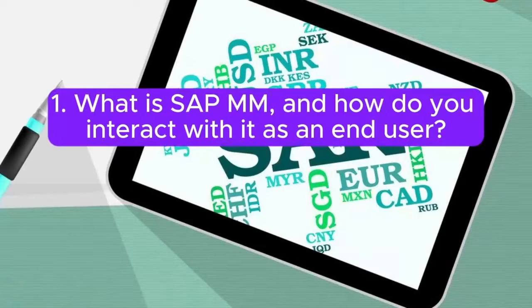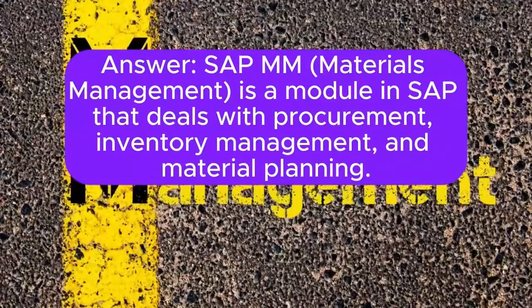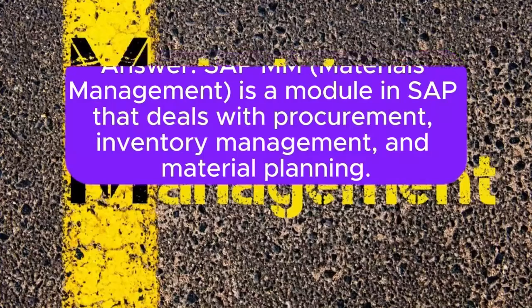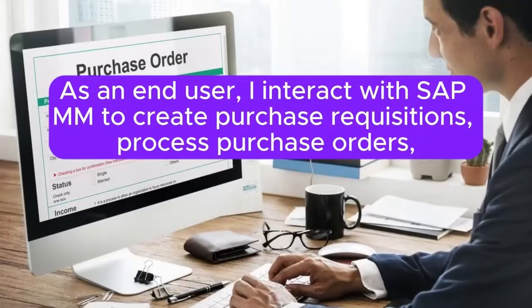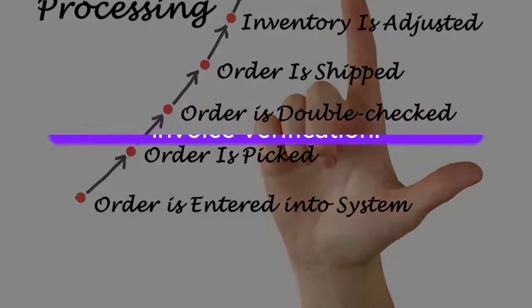Question 1: What is SAP MM and how do you interact with it as an end-user? Answer: SAP MM (Materials Management) is a module in SAP that deals with procurement, inventory management, and material planning. As an end-user, I interact with SAP MM to create purchase requisitions, process purchase orders, perform goods receipts, and handle invoice verification.